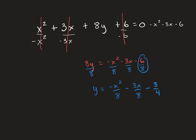What prompted me to try to get y by itself? It was that the only thing squared in this was the x. The y wasn't squared, so that told me it was probably a quadratic. So we get y by itself. Here it is with y by itself. The problem says tell if it's a quadratic — well, we've identified that it is a quadratic since only one of them is squared.